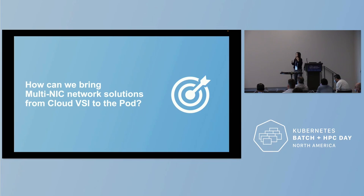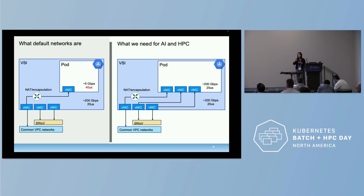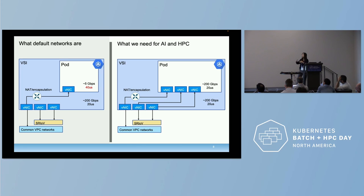The next problem is: how can we bring this multi-NIC network solution from the cloud VSI into the pod level? Right now in the default Kubernetes network system, we usually have one primary network interface on the pod that makes connections to the control plane. With that one, we usually have to pass the packet through address translations or encapsulations to make the pod packet routable to another instance, which reduces throughput and increases latency.